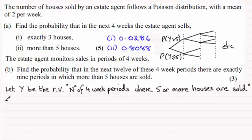So I can say that Y is distributed binomially, and there's two parameters for the binomial distribution. The first is N, the number of trials, which is 12, and the second is P, the probability of success. And that would be where the estate agent sells 5 or more houses in that 4 week period. And we've seen that that probability from part 2 was 0.8088.